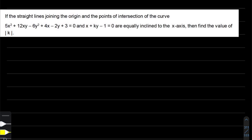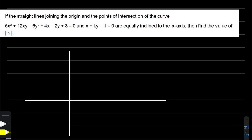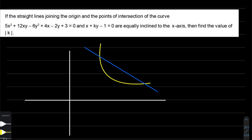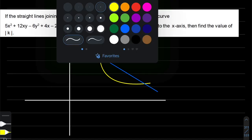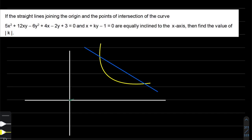Let's first draw this particular scenario. Here is our general second degree curve — I'm just drawing a part of it — and this is a line which cuts this curve. We are joining the origin to the point of intersection of the curve and the blue straight line, connecting the origin to the point of intersection of the line and the general second degree equation of that curve.